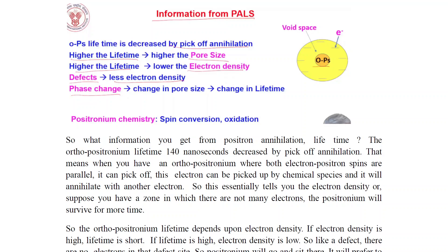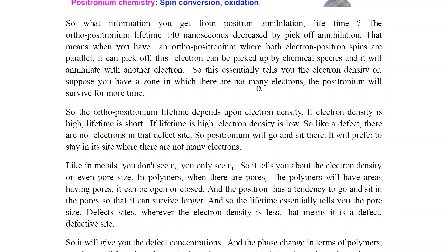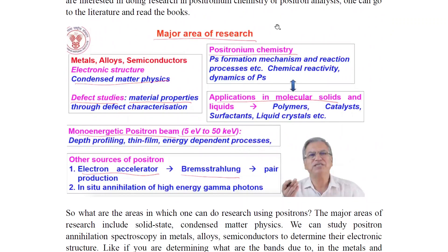Positronium chemistry involves spin conversion and oxidation. Major research areas include metal alloys and semiconductors — electronic structure for condensed matter physics — and defect studies for material properties through defect characterization. Positronium chemistry covers Ps formation mechanisms and reaction processes, and chemical reactivity and dynamics of Ps.